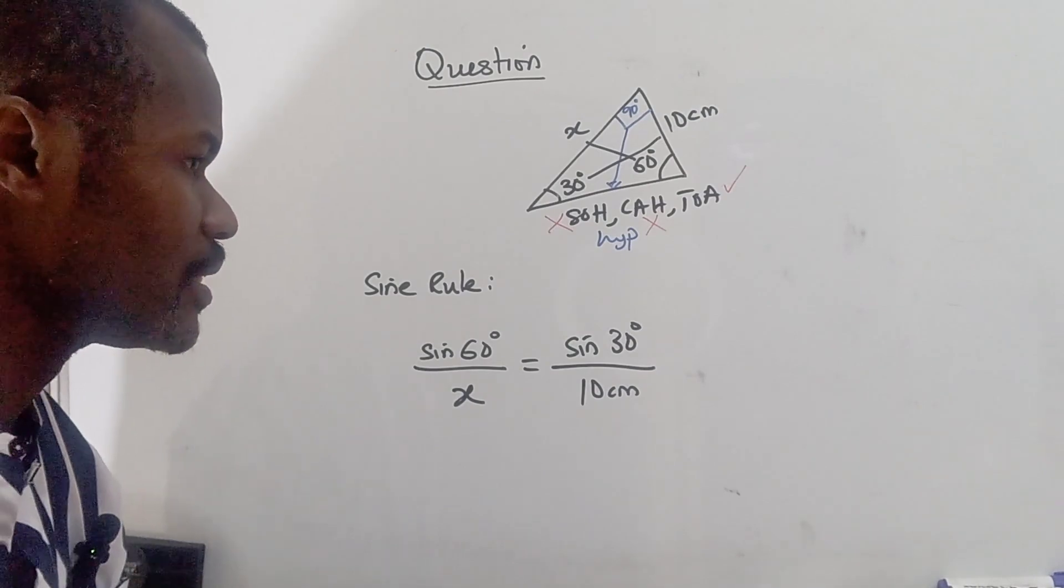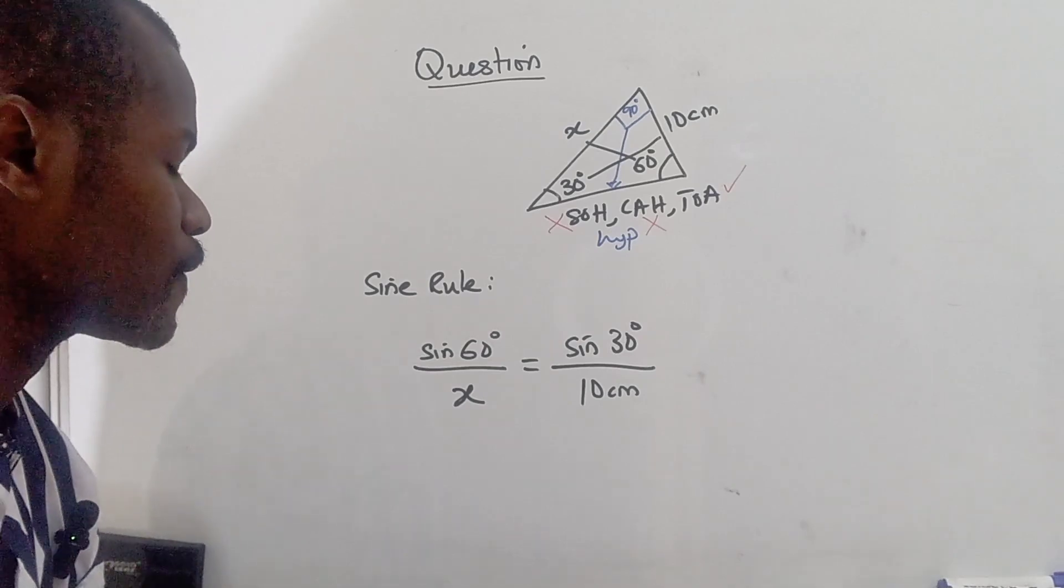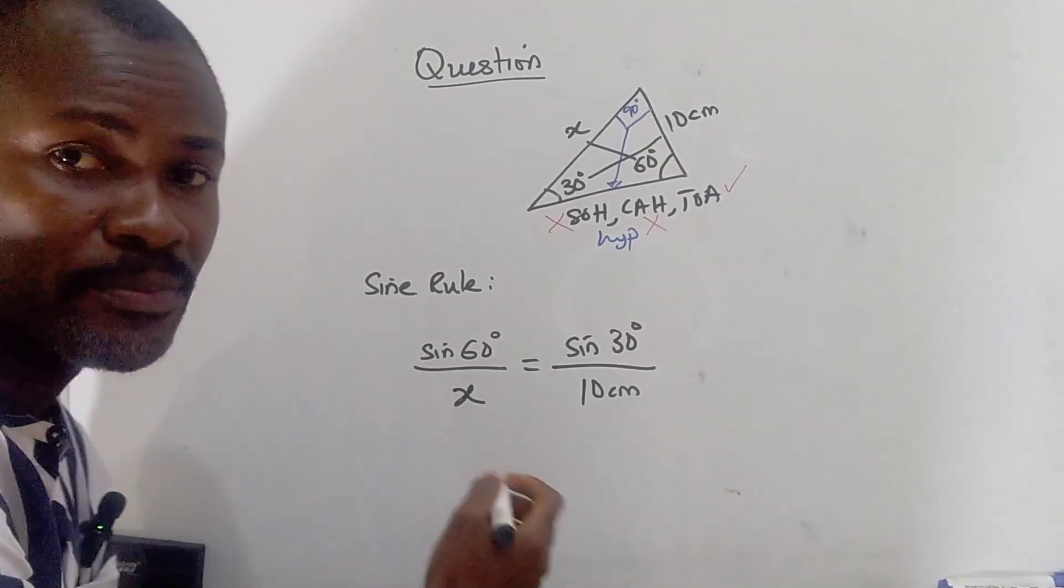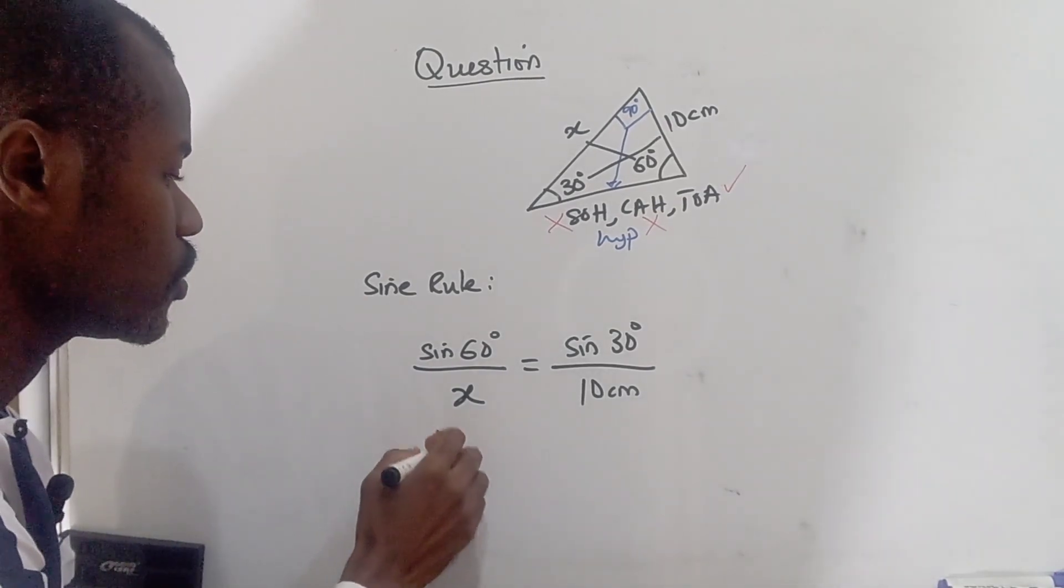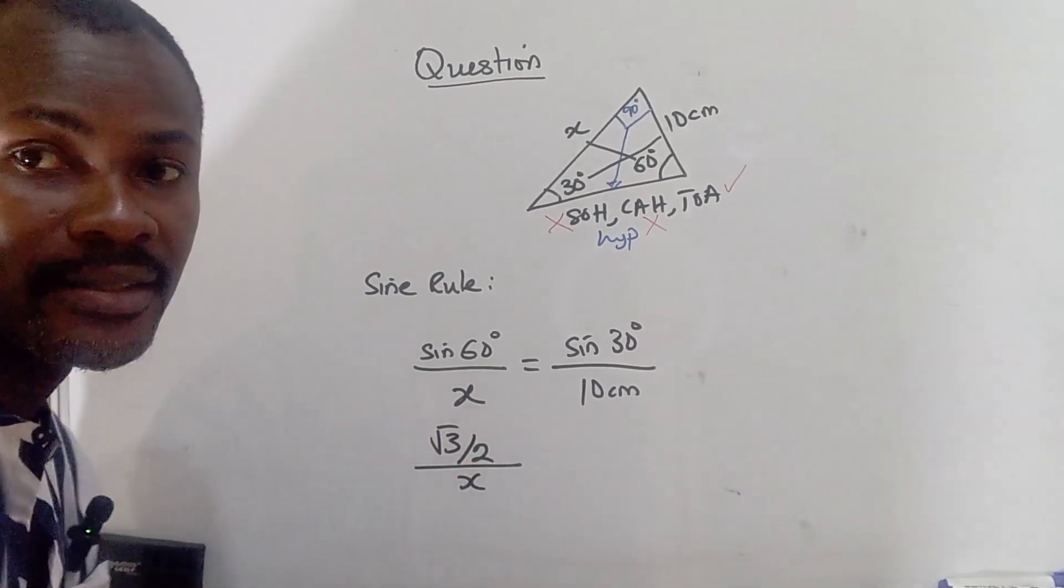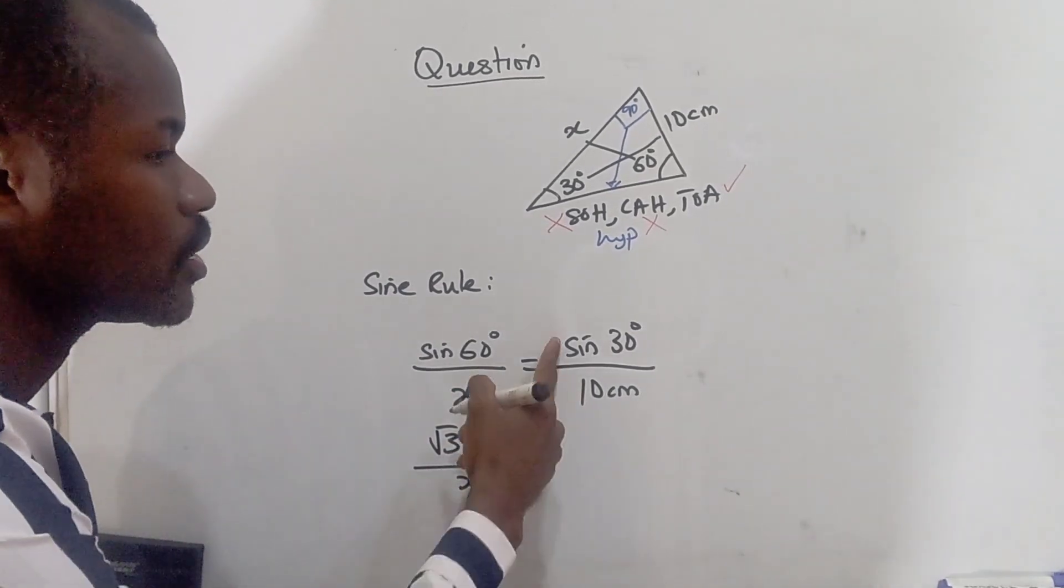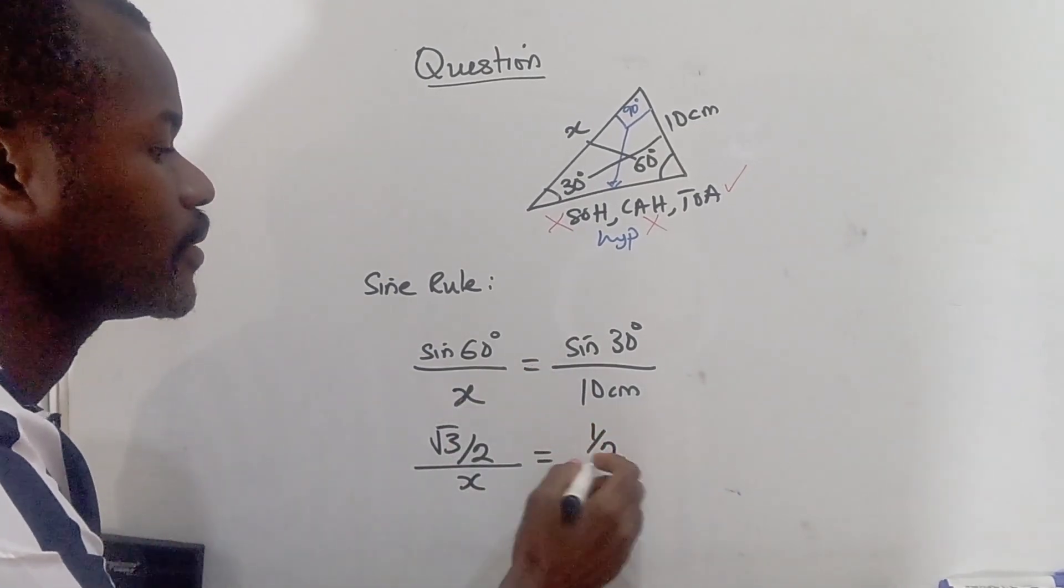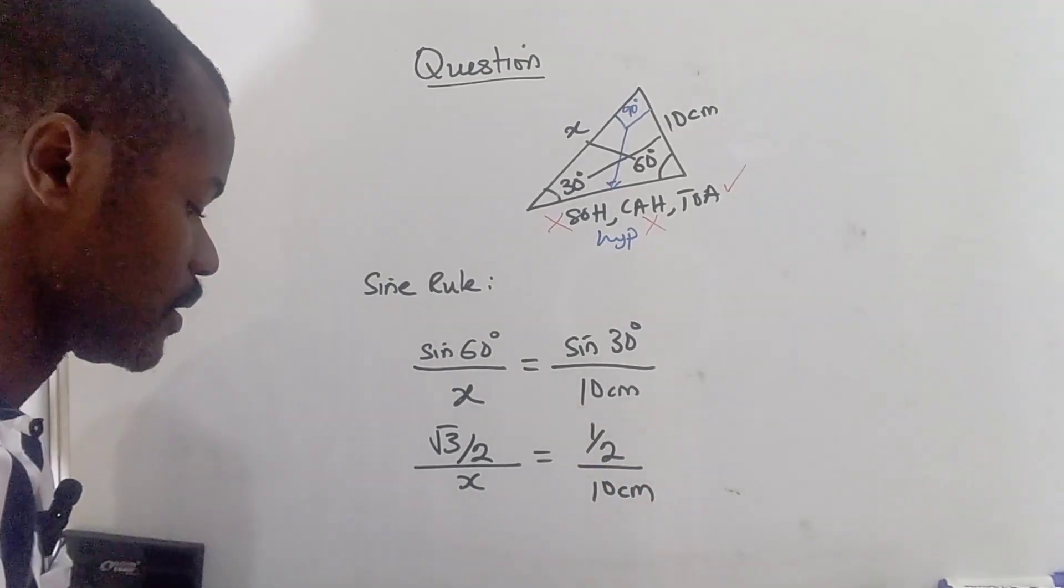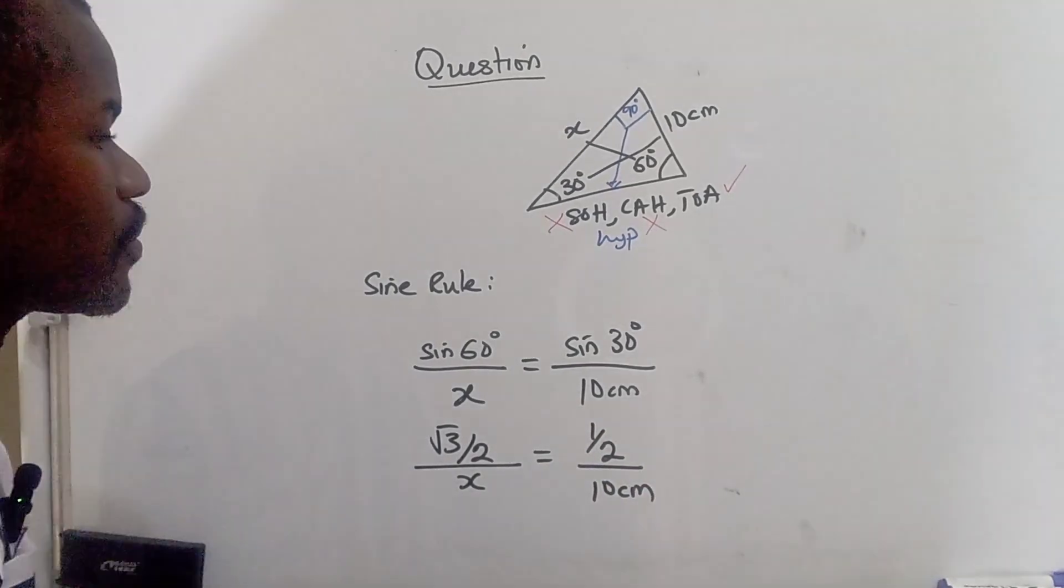So let's quickly do that. Now, from this, I can see that sine 60 by special angles is root 3 divided by 2. So all over x. What about sine 30? Sine 30 is half. So divide by 10 centimeters.